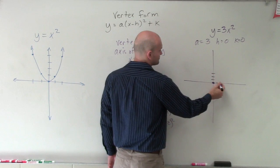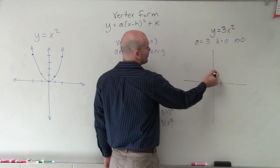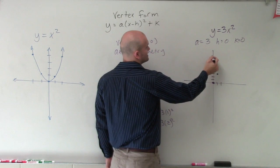So over at 1, I go up 3. 1, 2, 3. And over 2, I'm now going to go up 12. 1, 2, 3, 4, 5, 6, 7, 8, 9, 10, 11, 12.